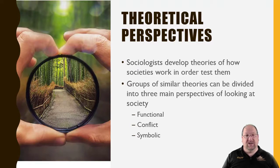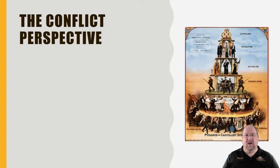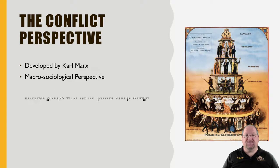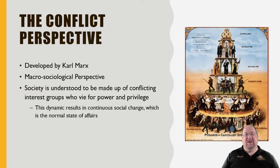Sometimes these perspectives are related when looked at together; sometimes they're completely different. The first perspective we're going to talk about — probably the easiest to understand — is the conflict perspective, which was developed by Karl Marx. The conflict perspective is a macro-sociological perspective, so it looks at society as a large group: a city, a large factory, a state, or even a nation. It defines society as being full of conflict and problems caused by different groups of people.